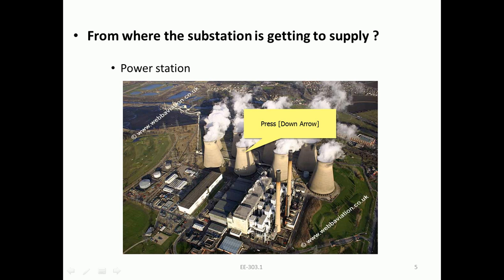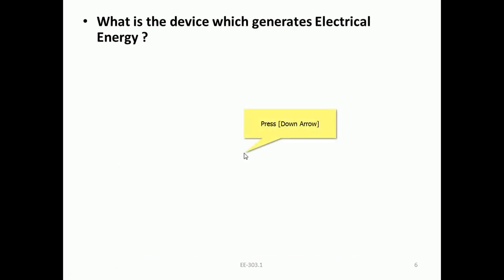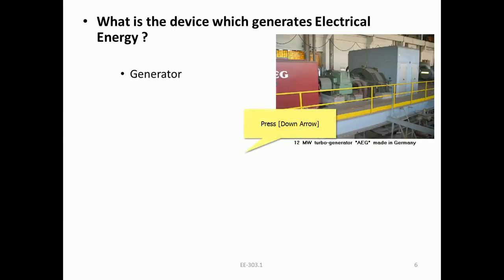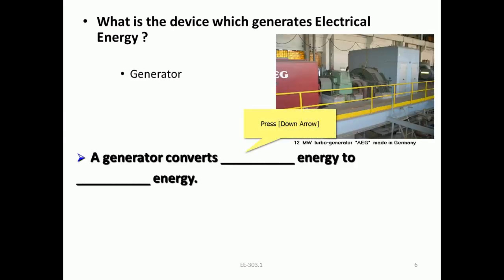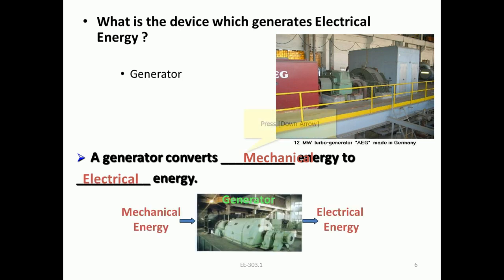We will see the image of thermal power plants. We will look at the current generator. The generator is a device which generates electrical energy. A generator converts mechanical energy to electrical energy.